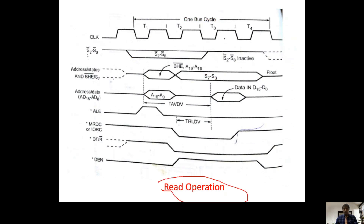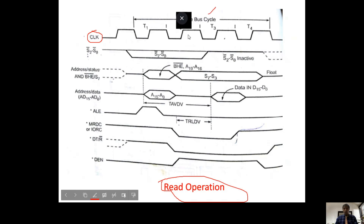Let us see how to develop the timing diagram for a read operation. The clock simply generates clock pulses; from T1 to T4 is one machine cycle or bus cycle. The status lines S0 bar to S2 bar activation is optional depending on the problem. T1 is the first part of the machine cycle and T2 to T4 are the remaining parts.